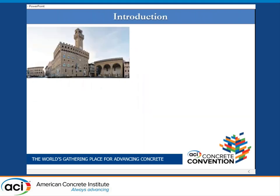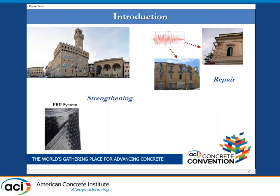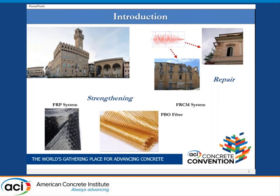The world is rich in historical buildings of masonry or reinforced concrete structures. Generally, we can work on these by repair after an earthquake, or by strengthening using a composite material such as an FRP system or FRCM system, with different types of fiber.